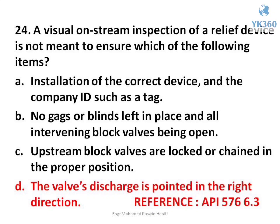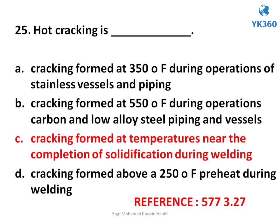Question number 24. A visual on-stream inspection of a relief device is not meant to ensure which of the following items? Options are: A. Installation of the correct device and the company ID such as a tag, B. No gags or blinds left in place and all intervening block valves being open, C. Upstream block valves are locked or chained in the proper position, D. The valve's discharge is pointed in the right direction. Answer is option D. The valve's discharge is pointed in the right direction.